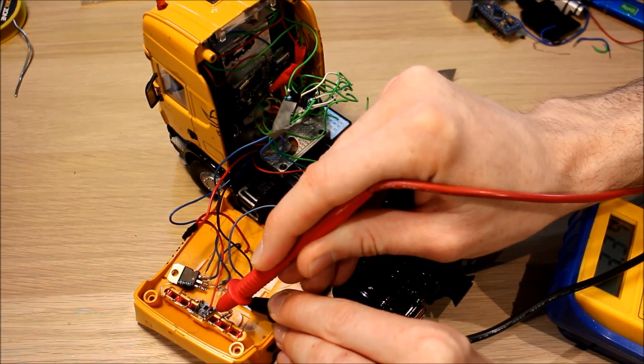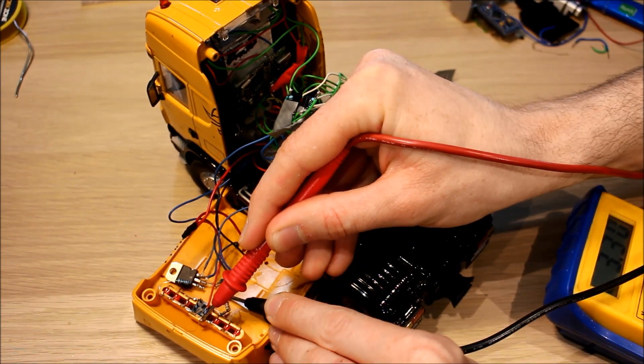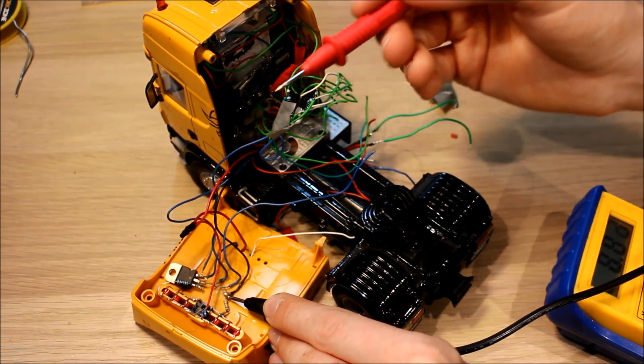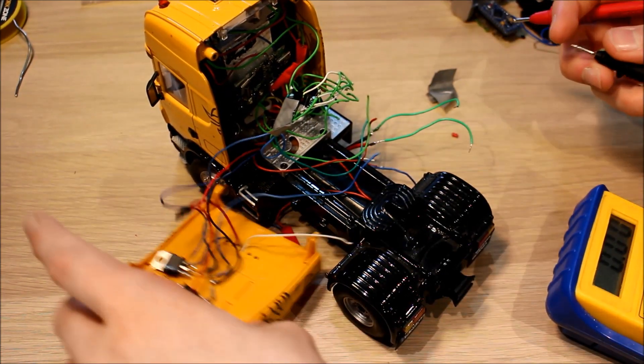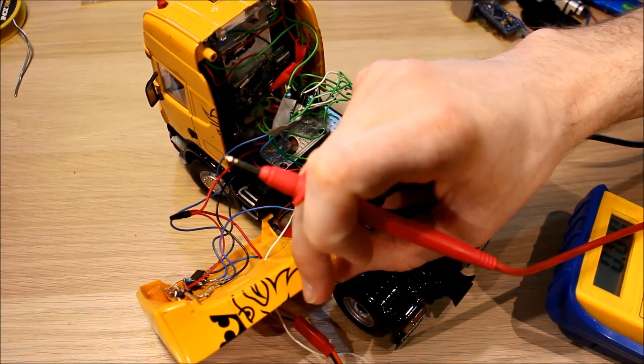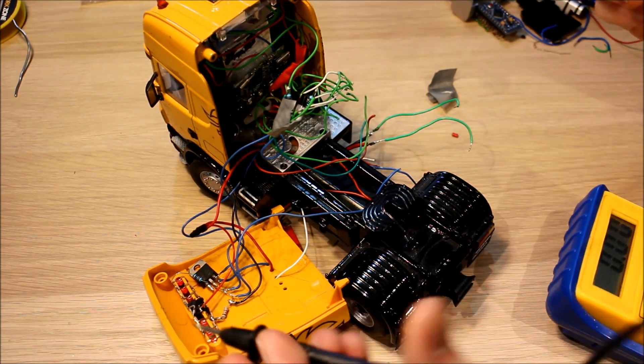So if that's 3.3 volts, either there's a regulator in there somewhere, or my battery is actually amazingly flat to exactly 3.3 volts, which would be quite strange. I can see no other possibility. I can't see anything in there that will be dropping the voltage.